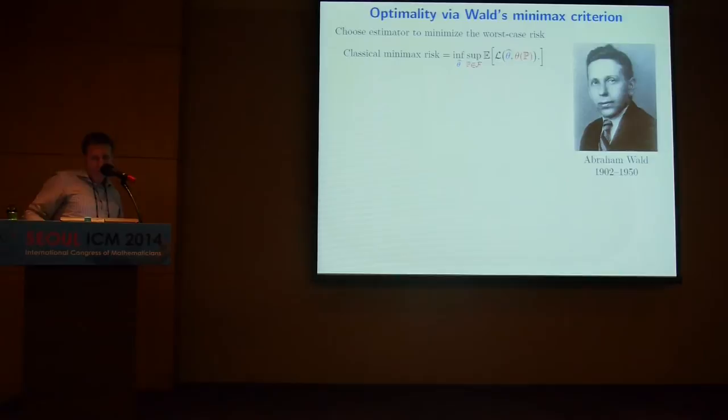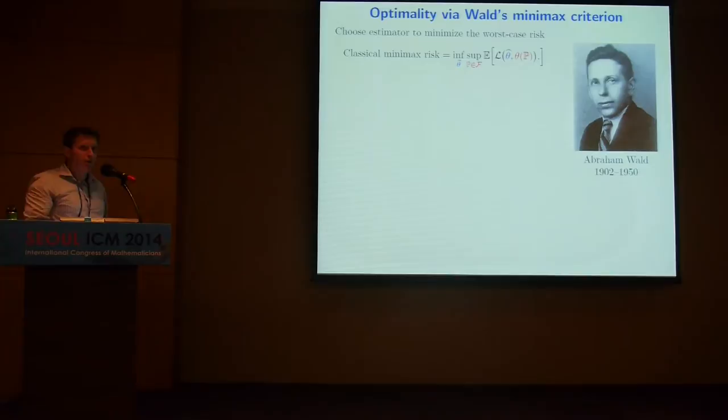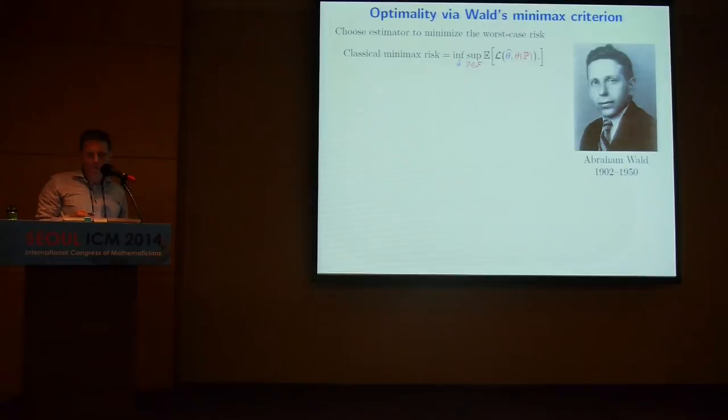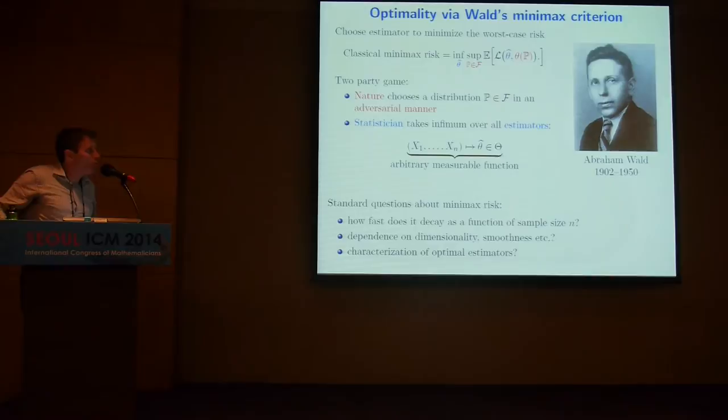The minimax risk for a given problem is given by taking a sup over all distributions in your family, equivalently a sup over all parameters, and then an inf over all estimators that are measurable functions of the data. It's like a game — nature is being evil, choosing bad parameters, while you do your best to choose an estimator that minimizes the worst-case risk. Nature chooses a bad distribution, and you choose a good estimator.